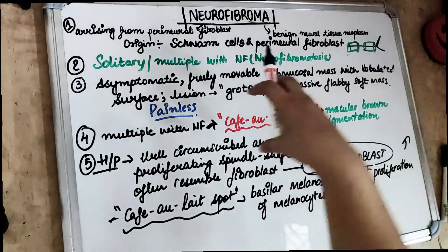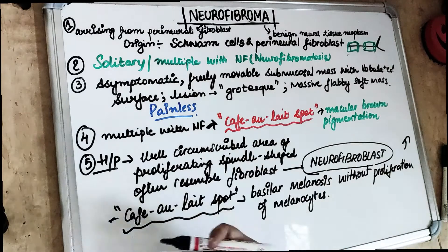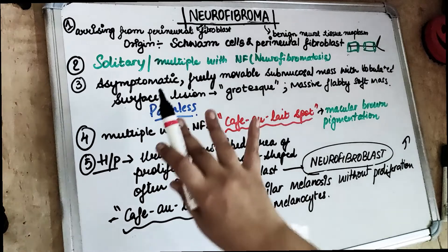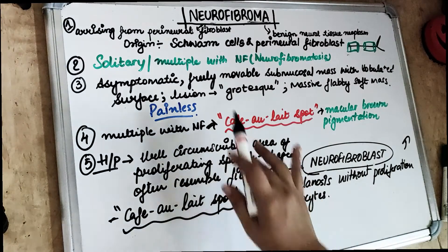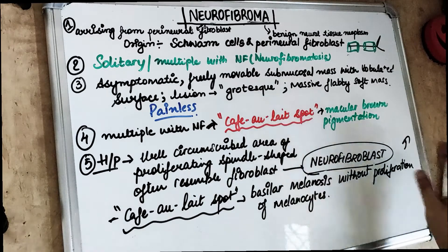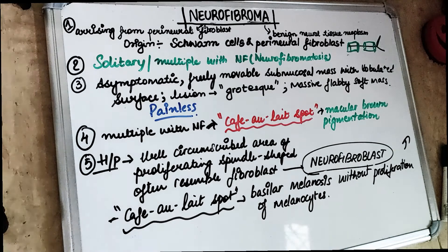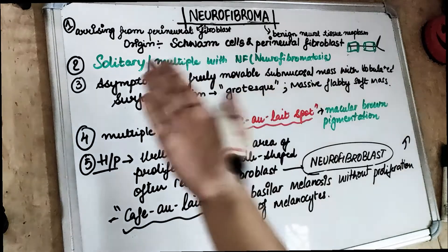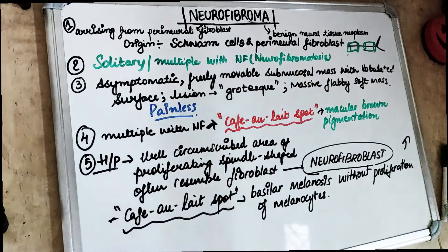Neurofibroma presents with a specific lobulated surface. The growth is either solitary or seen in multiple areas. When seen in multiple areas, it is usually associated with neurofibromatosis. In neurofibromatosis with multiple neurofibromas, we see café-au-lait spots — brown color macular pigmentations seen on the skin. So neurofibroma presents either as a solitary lesion or as multiple lesions with neurofibromatosis.